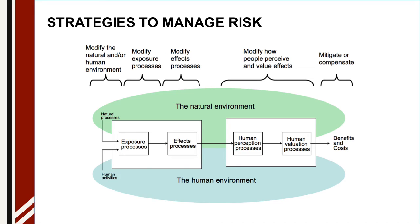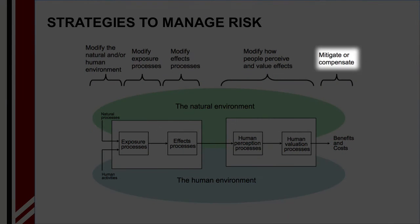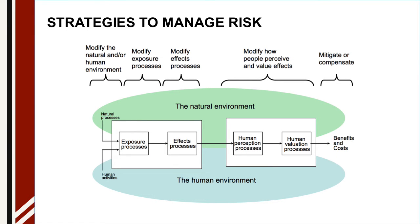And then at the right-hand end — benefits and costs — I can mitigate or compensate. That means things like insurance. There may not be anything else I can do, but I can at least insure against the event. To take an example like a fire in my house: I can modify exposure processes by making sure I don't have aluminum wire that might cause short circuits and start a fire. I can modify effects processes by making sure I have smoke detectors. And then at the right-hand end, I can have fire insurance so that if all else fails, I at least get compensated.